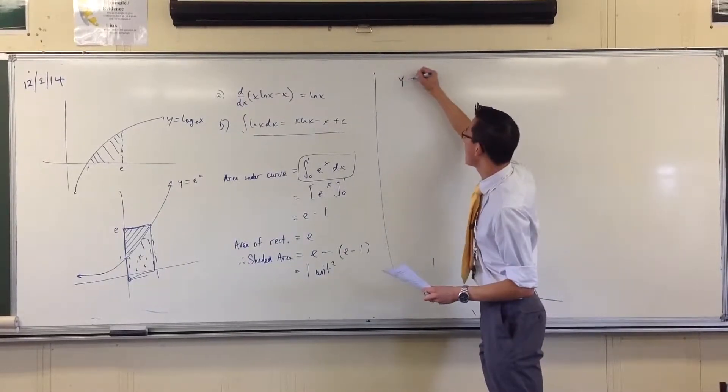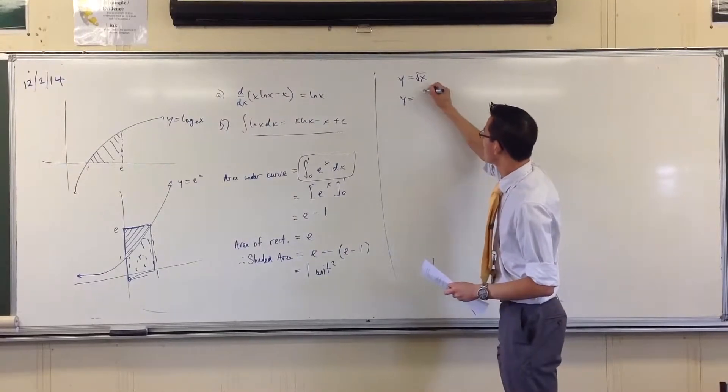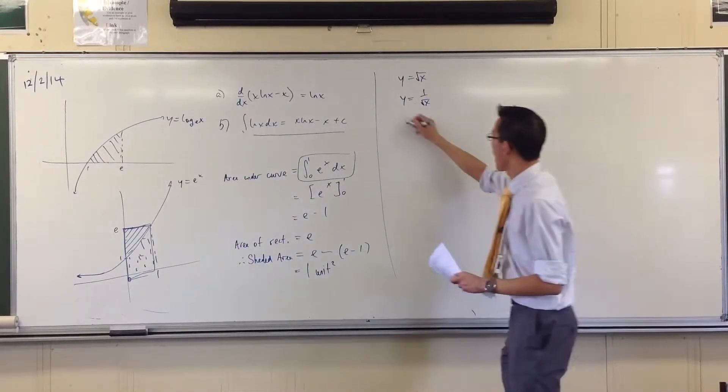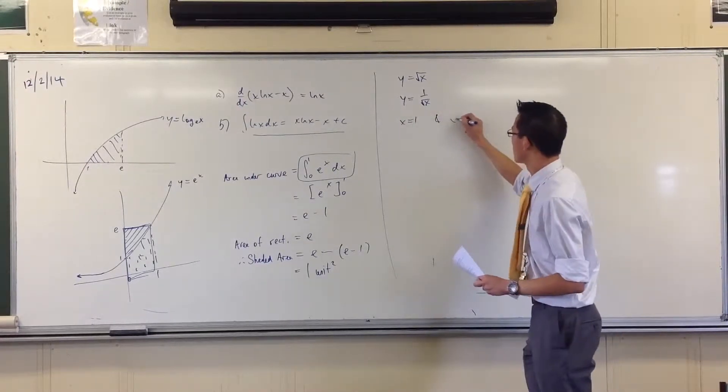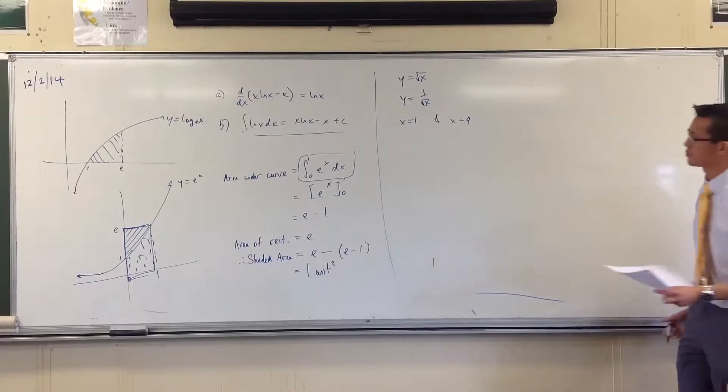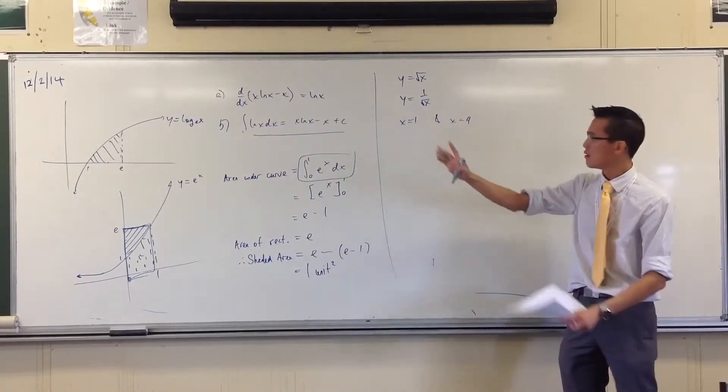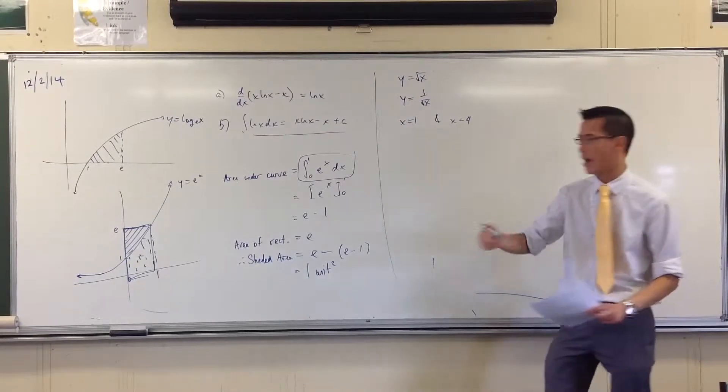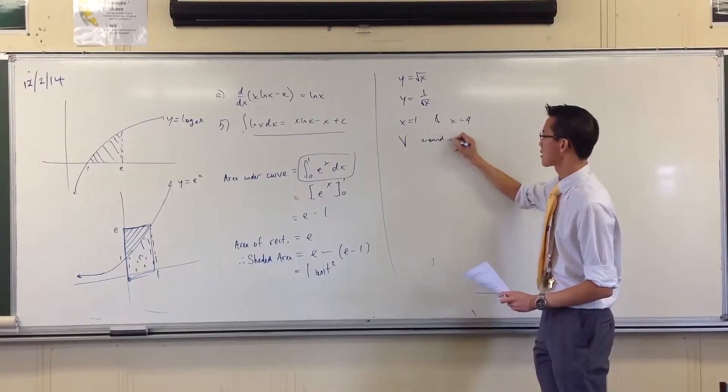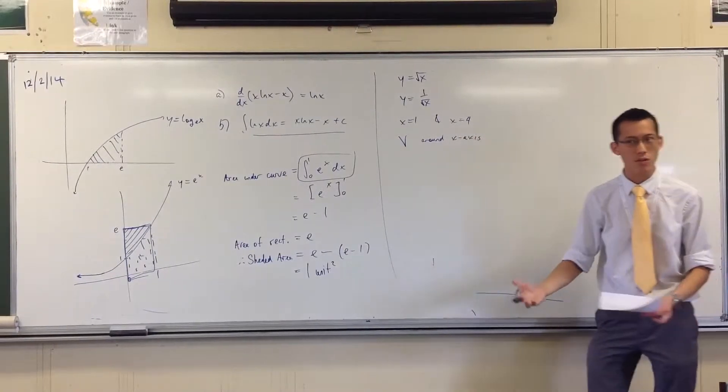They want you to calculate what happens when you take the area between this, this, and these boundaries. I don't think I assigned it, you may have done it. They want you to take that area and rotate it around the x-axis, so the volume around the x-axis. I'd like you to draw it.